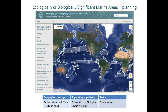Ecologically or Biologically Significant Marine Areas, known as EBSAs, are a planning tool. They are areas identified as important for the healthy functioning of our oceans and the services they provide. There are seven criteria for establishing an area as an EBSA, including rarity, uniqueness, and special importance for species.